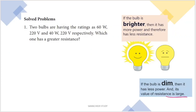So, the first problem: two bulbs have ratings of 60 watts, 220 volts and 40 watts, 220 volts respectively. Which one has the greater resistance?